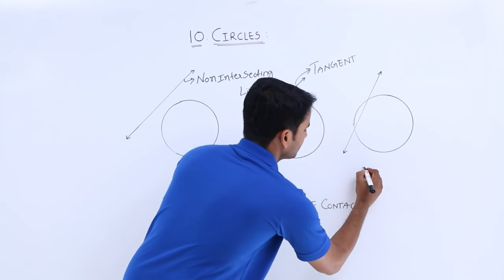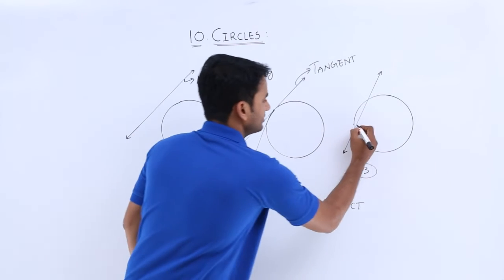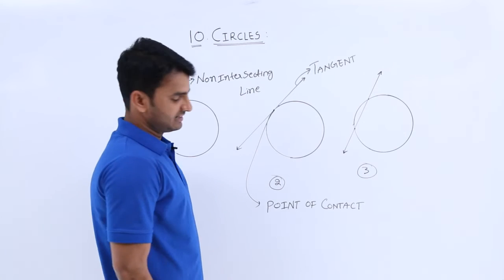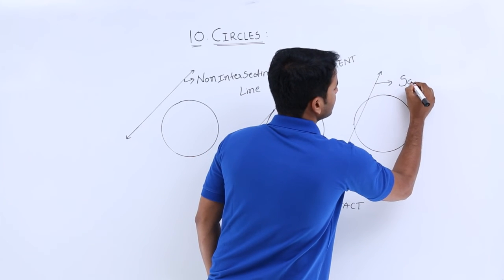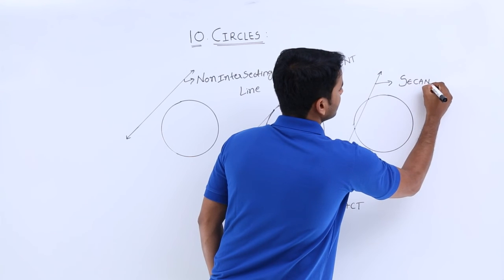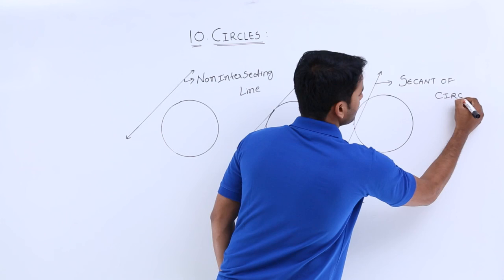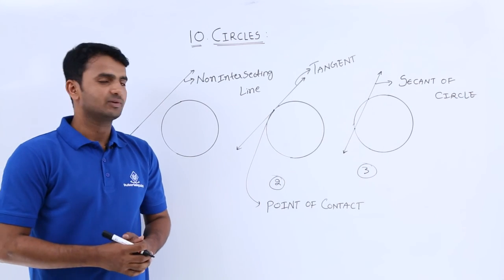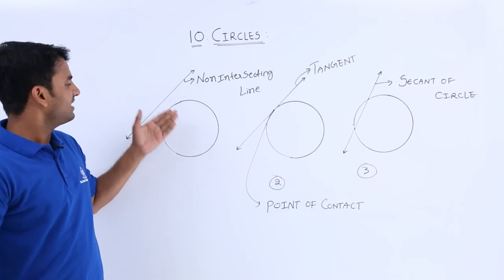And here, coming to our third case. Here, this line is considered as a secant of circle. So guys, these are the three situations which arise when a line and circle are given.